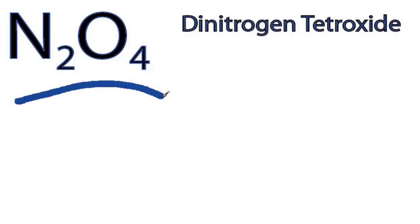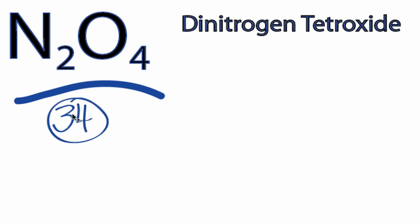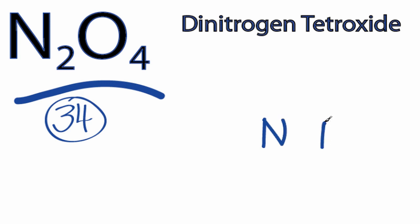This is the N2O4 Lewis structure. For N2O4, we have a total of 34 valence electrons. N is the least electronegative, so we'll put the Ns in the center, and then we'll put the oxygens on the outside.